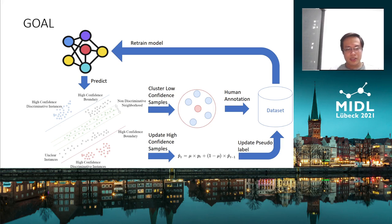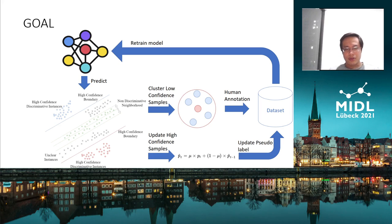The high confidence region consists of data points that have a confidence score in the range of 0 to 0.1 and 0.9 to 1. The confidence score of the model is then used to update the running confidence score to stabilize the training.